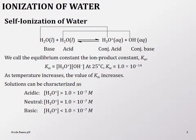Let's look at the ionization of water — specifically the self-ionization of water. Here water acts as both a base and an acid. The base water molecule accepts a proton, becoming the conjugate acid hydronium ion, and the acidic water molecule gives a proton away to become the conjugate base.